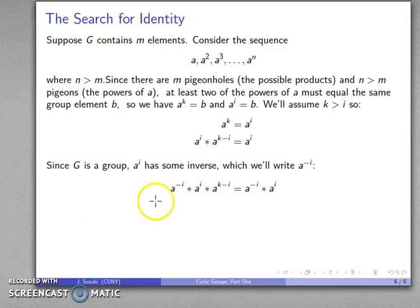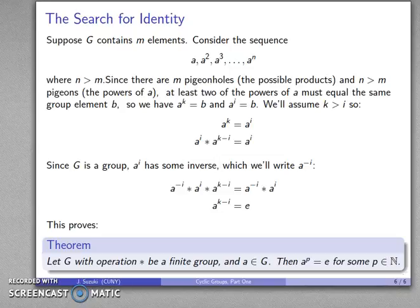And so that gives me multiplying on the left. And because it's the inverse, and because it's a group, I have associativity. I can multiply these two things together. Because if it's an inverse, the product of these two is the identity. The product of these two is the identity. And so I get A to the power K minus I equal to the identity element.